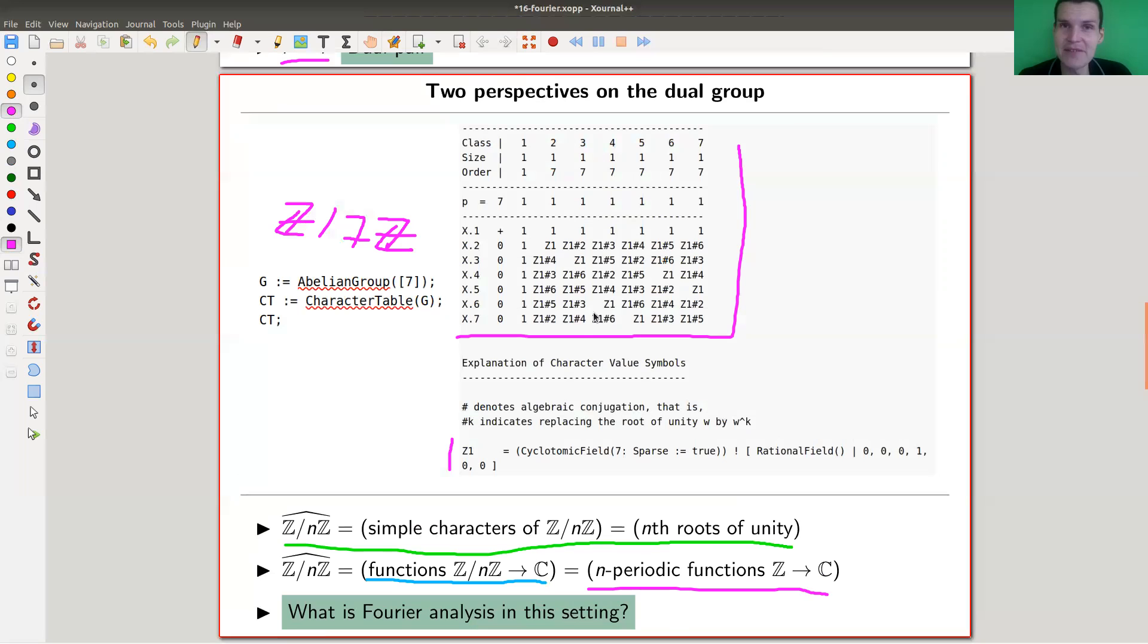So maybe there should be some version of Fourier analysis in the setup of finite groups. So what is it actually? Here's how it works - really just the same formulas just in the finite setup.